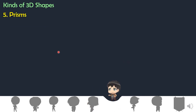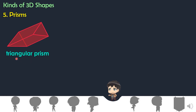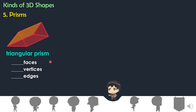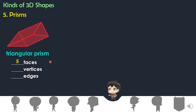Number 5 are the prisms. There are many kinds of prisms. First, we have the triangular prism. Let us count the faces: one, two, three, four, five. The triangular prism has five faces.